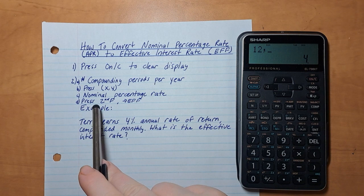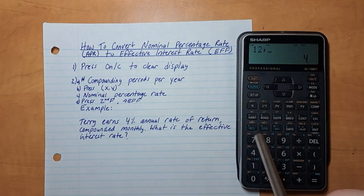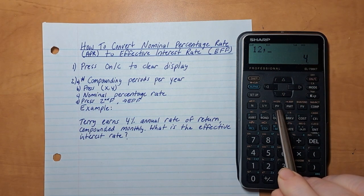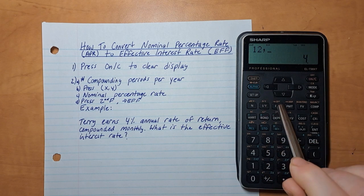And then you press second function, and EFF, which is also the PV key, but it's second function, so it's EFF.